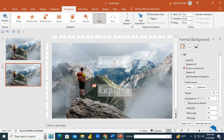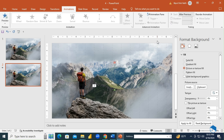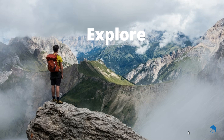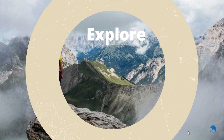Set the animation to Start After Previous from the Timing options. And there you have it — now your text reveals beautifully on the slide. Thanks for watching. See you next time.